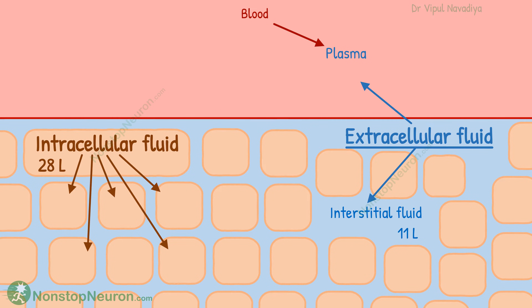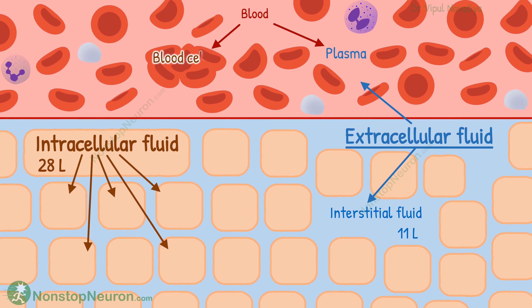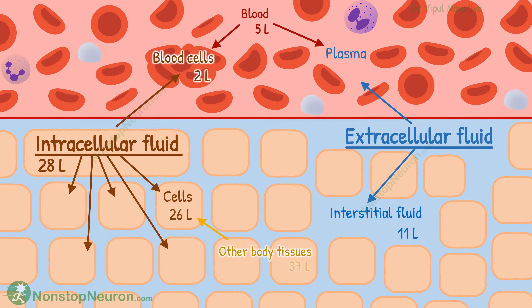The plasma is the free fluid in the blood. Blood contains blood cells — red blood cells, white blood cells, and platelets — and free fluid called plasma. The total volume of blood is about 5 liters; out of that, the cells take up about 2 liters. Note that the 28-liter intracellular fluid figure includes these 2 liters of blood cells, so the volume of cells in all other tissues combined is about 26 liters. The remaining portion of blood is plasma, which is 3 liters.